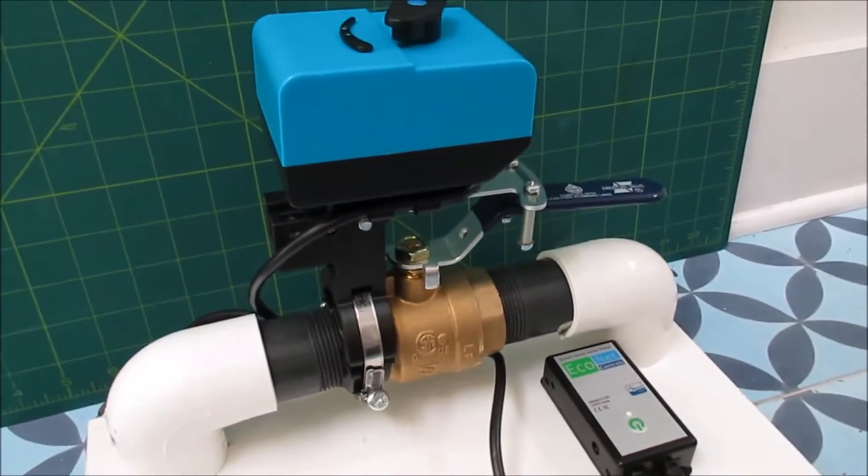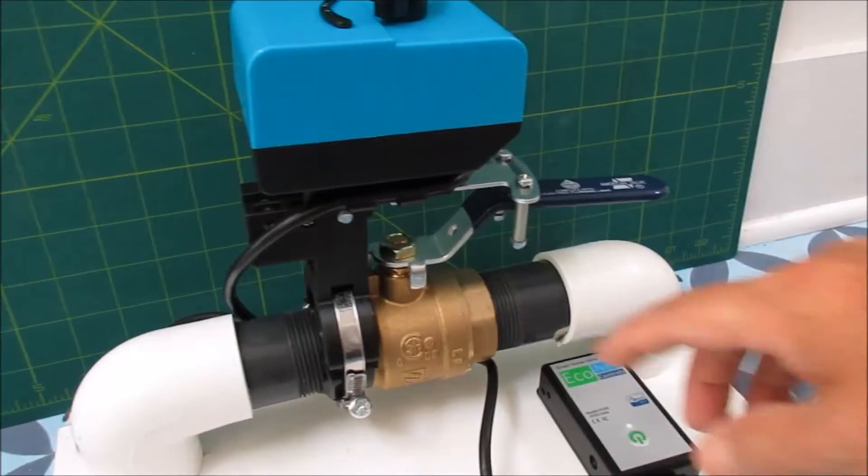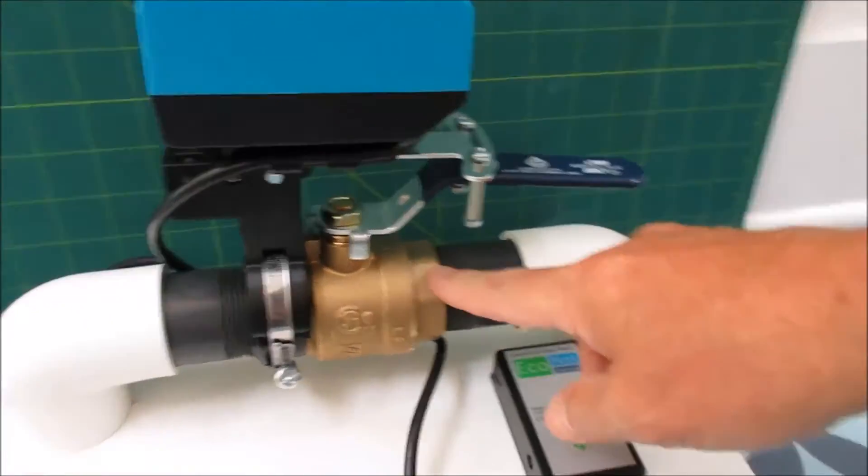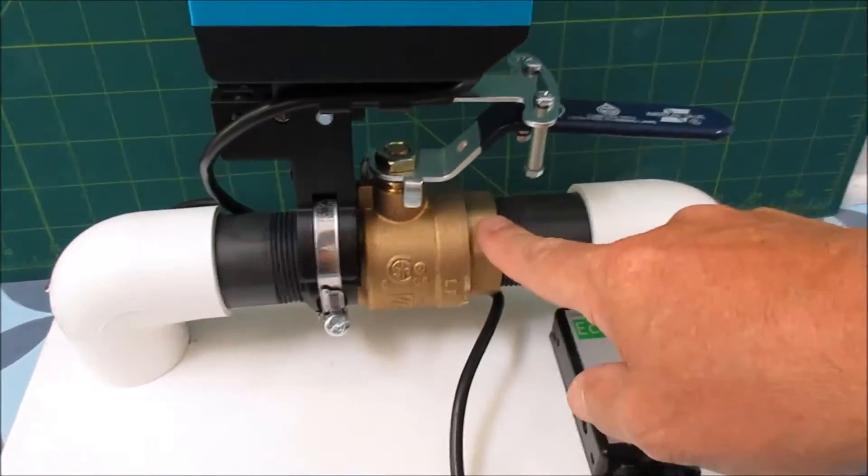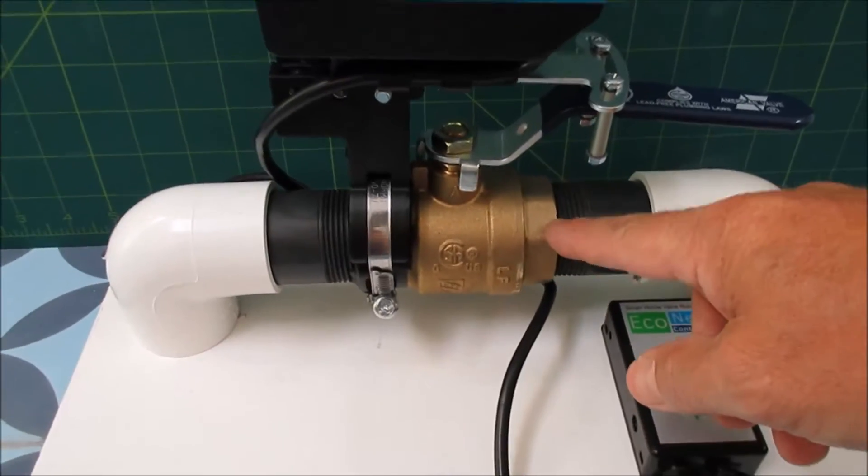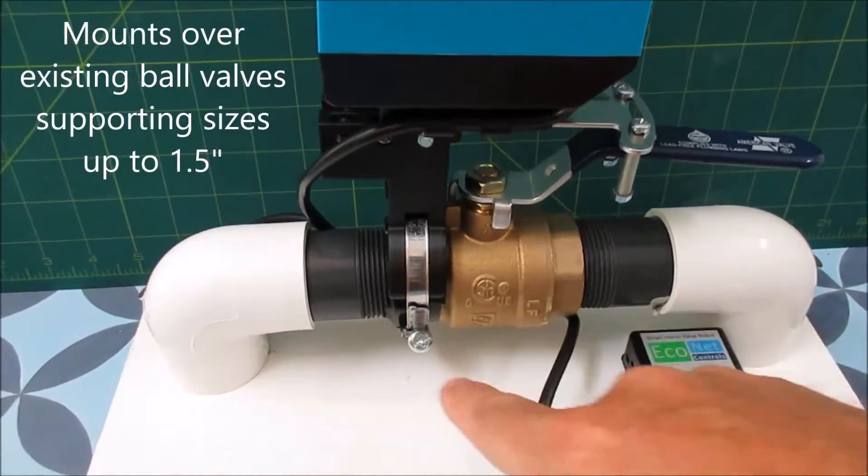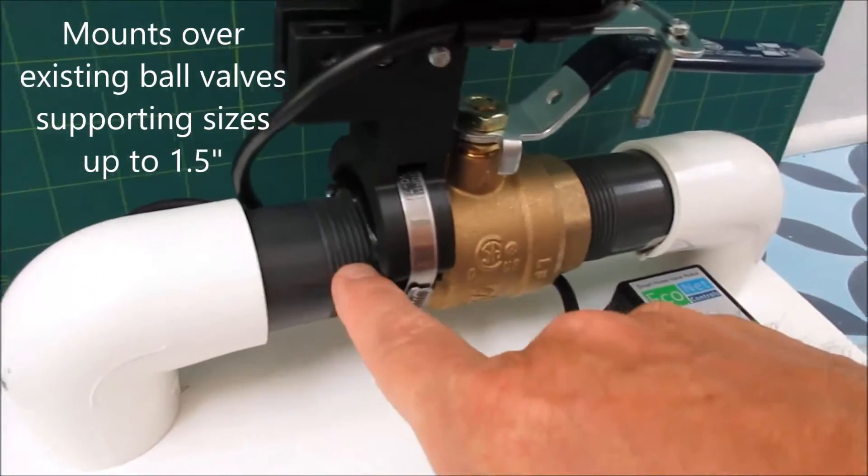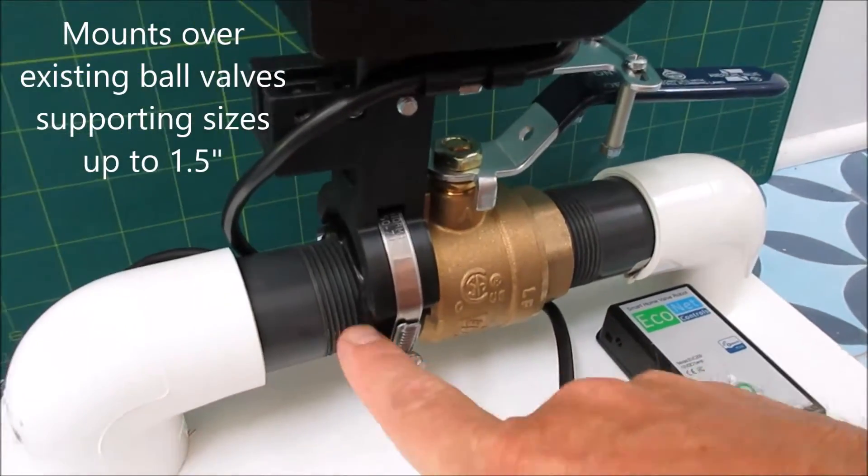I'm just going to explain how I mounted it first. This valve type is a threaded type and it has the hex collar here. What we do is we first wrap the collar with the included silicon tape and that adds some stability and evens it out enough for our standard mounting bracket.